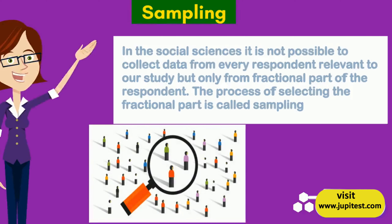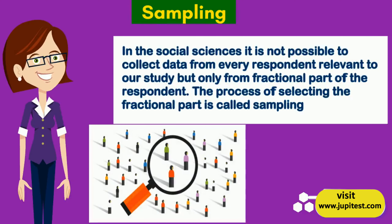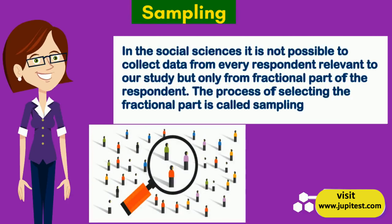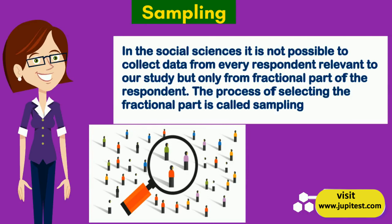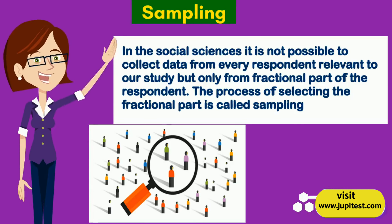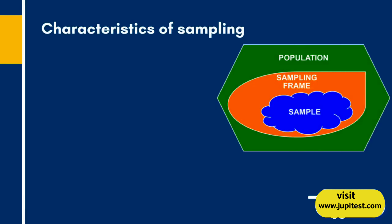In sampling in the social sciences, it is not possible to collect data from every respondent relevant to our study, but only from a fractional part of the respondents. The process of selecting this fractional part is called sampling.